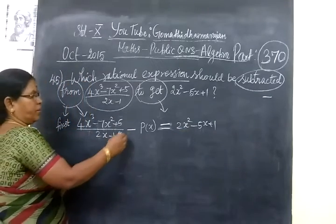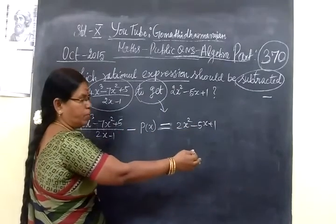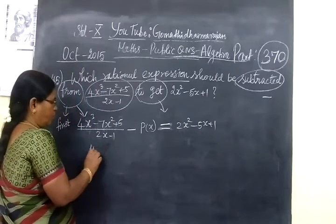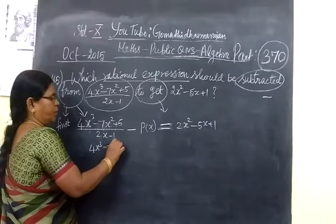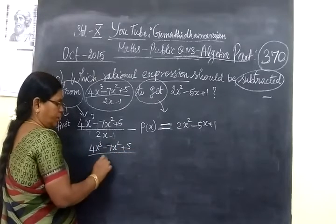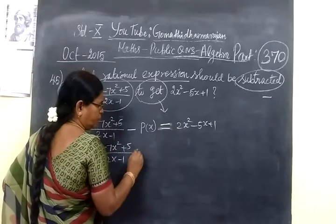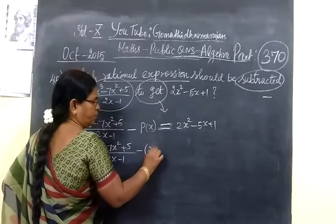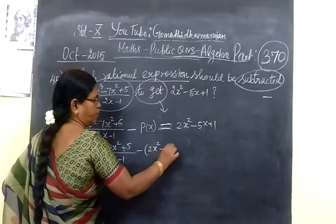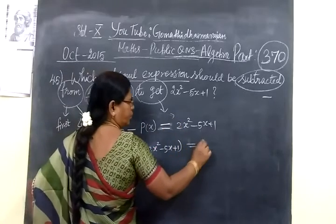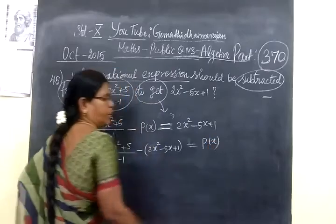Now P of X, this side of zero minus, this side is plus side. So 4x cube minus 7x square plus 5 by 2x minus 1. The whole thing you bring this side. So minus 2x square minus 5x plus 1. This minus on the side of zero, plus side. So this equals P of X.